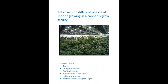Let's examine different phases of indoor growing. Here is a picture of a cannabis growth facility with artificial lights, temperature control, humidity control, and an irrigation system. You can use devices like timers, computer control, artificial lighting, and metrics to measure the grow light. In order to situate the plants at the right height and distance from the light, you should measure the amount of light falling on them at the canopy level — so it's quite important to have some metrics.